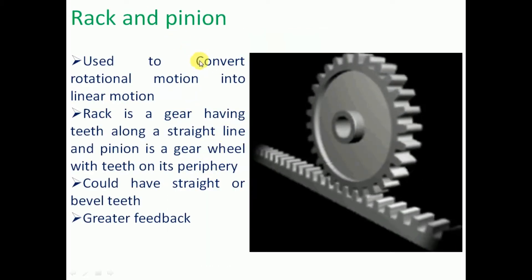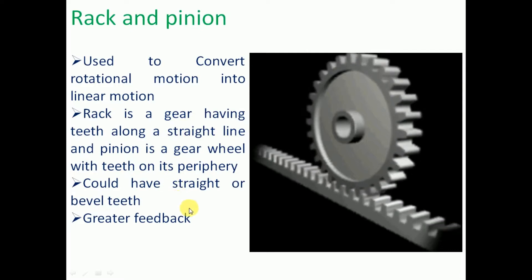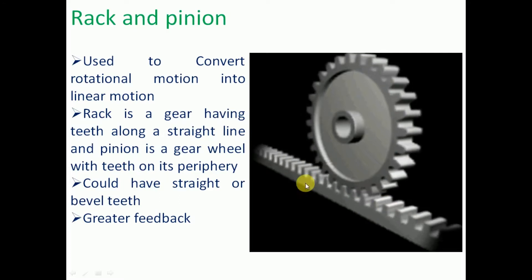Rack and pinion is used to convert rotational motion into linear motion. The rack is a gear having teeth along a straight line, and the pinion is a gear with teeth on its periphery. The teeth may be straight or curved, and this mechanism provides greater feedback. The main purpose is to convert rotational motion into linear motion.